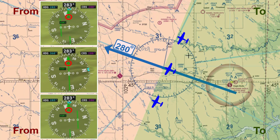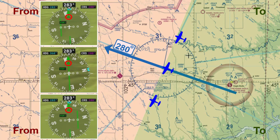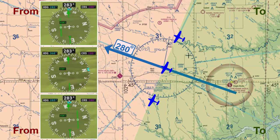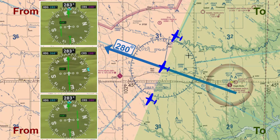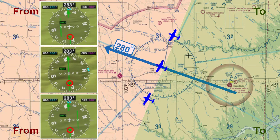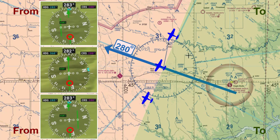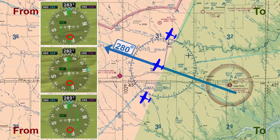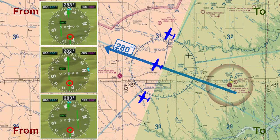Now notice as all three planes get ready to transition from the TO side over to the FROM side, all three TO arrows momentarily disappear. Now, as all three planes are on the FROM side of the VOR as it relates to the 280 degree radial, there is a small arrow on the opposite side of the CDI needle pointing away from the larger arrow. This is used to indicate we are now on the FROM side of the VOR.